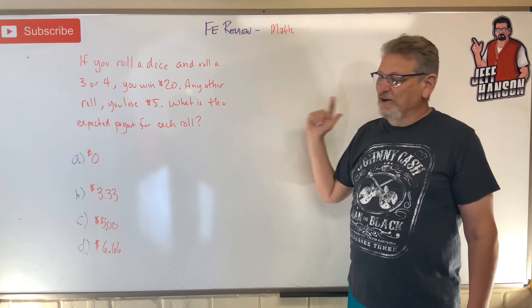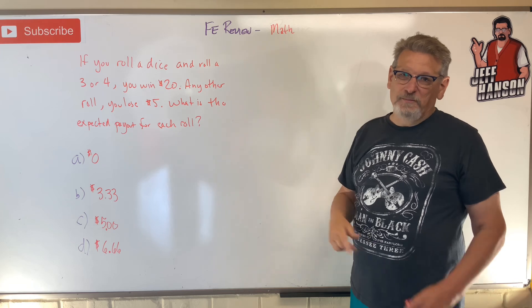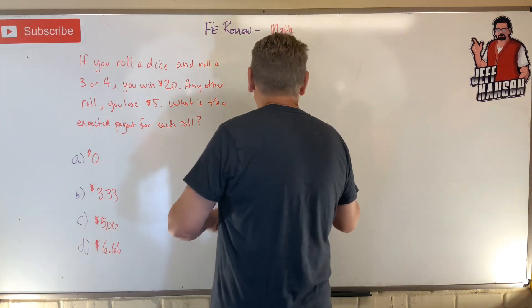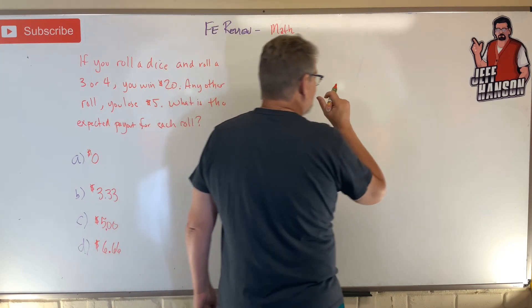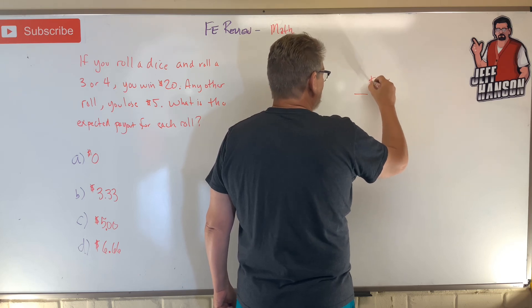Okay, here we go. There's two things that can happen. Number one is we could win $20. The next thing that can happen is we could lose $5.